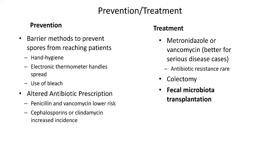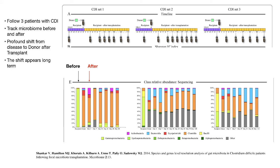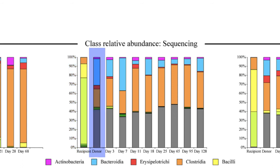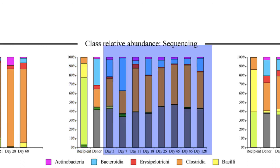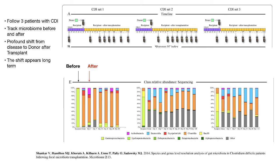Fecal transplants are an intriguing idea, but does it work? In the paper by Shanker et al., three patients with CDI were followed. Fecal samples were taken before the transplant and then various days afterward, DNA was extracted and sequenced. The diagram shows various types of bacteria found in the colon of each patient, and there was a profound shift from a disease state to that of the donor. This change appears to be long term, with the pattern being stable for more than three months. Symptoms of the disease dissipated, and this technique has had a 90% success rate with very little reoccurrence of C. diff infections — something that does occur with antibiotic therapy.